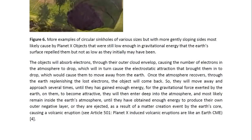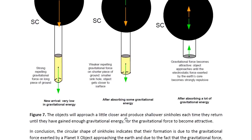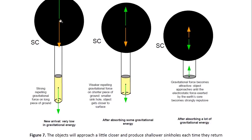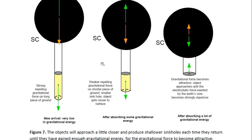Or they are ejected as a result of a matter creation event by the Earth's core causing a volcanic eruption — you may look at Article 501 for more details on that. Here you see illustrated what seems to occur as the objects gain gravitational energy. Each time they approach, they will most likely gain some gravitational energy. If they are able to reach the Earth's atmosphere, they will gain some gravitational energy. They will then cause the Earth's atmosphere to lose electrons, so they will move away because this repulsive gravitational force will become too strong for the electrostatic interaction. But then they will come back once the Earth's atmosphere is replenished by the Earth's core.